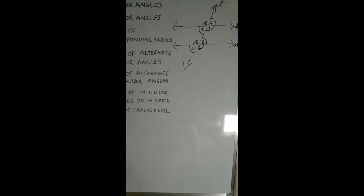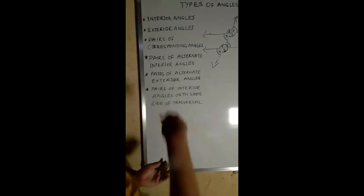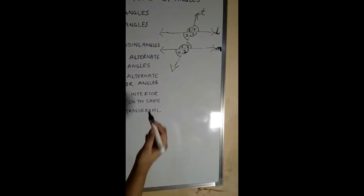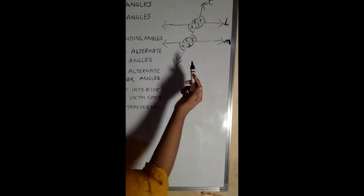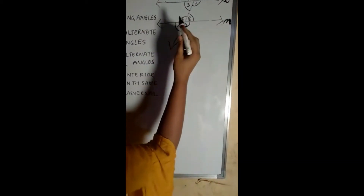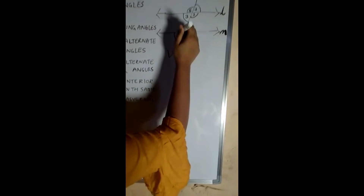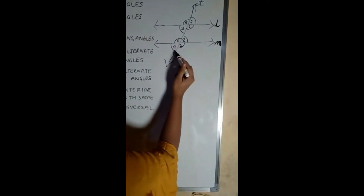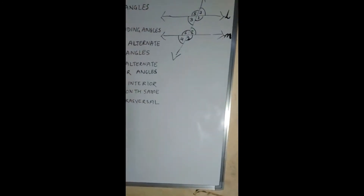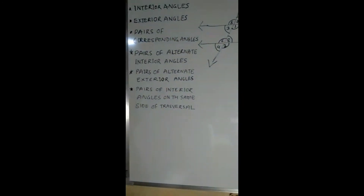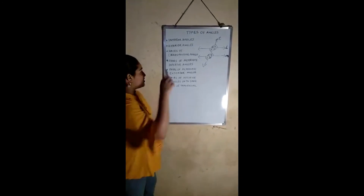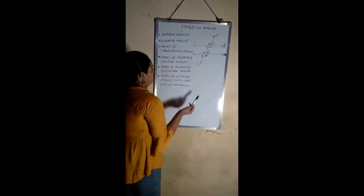Now let us study about exterior angles. Exterior angles are the angles which are outside the parallel lines. In this figure, 4, 2, 5, and 7 are exterior angles.